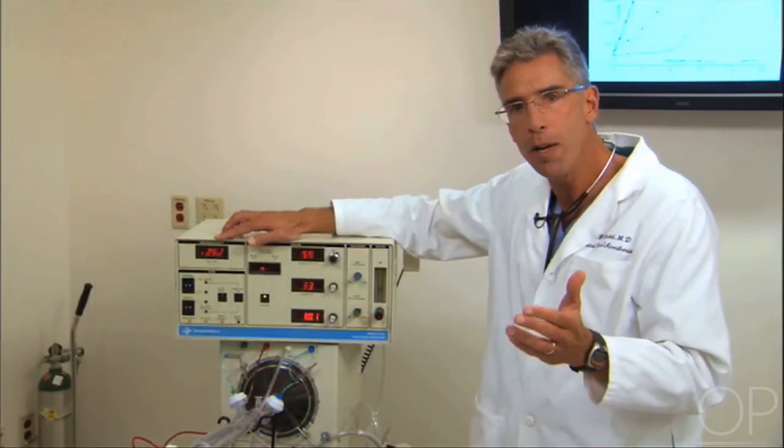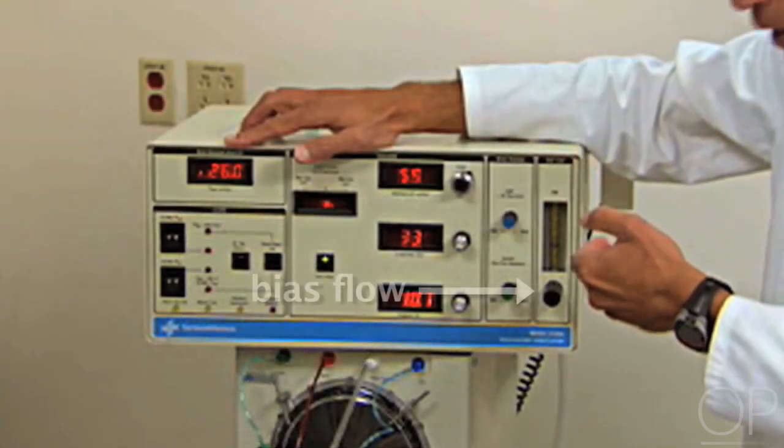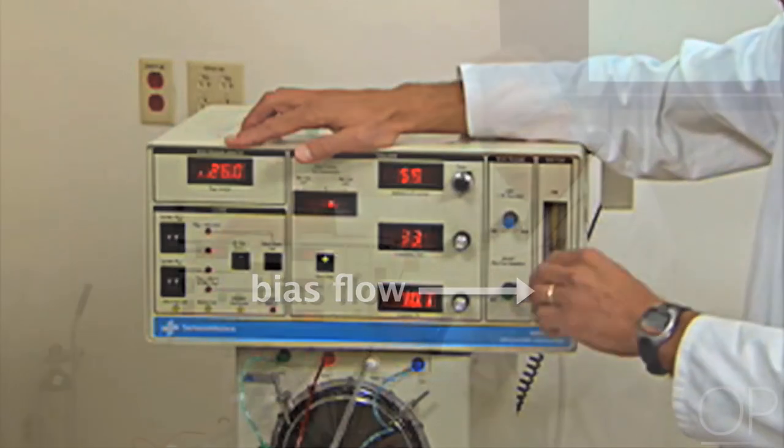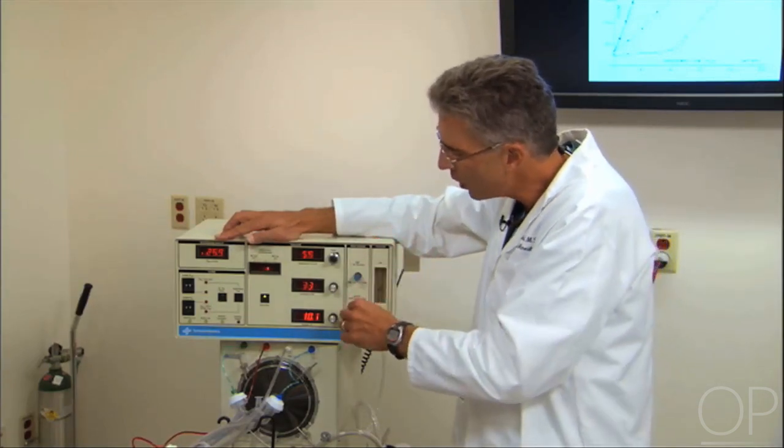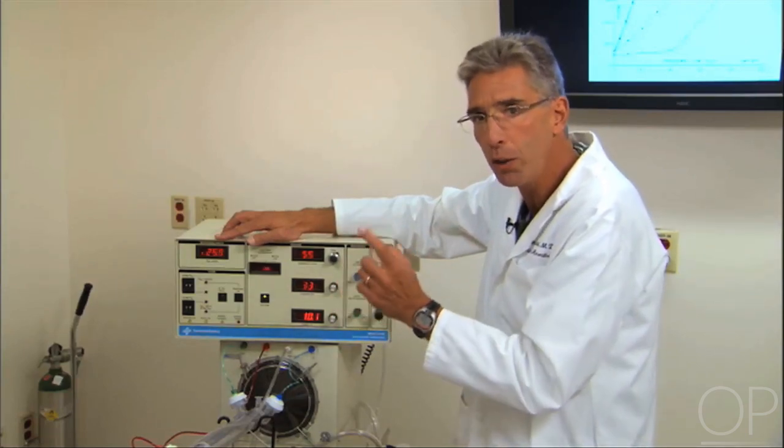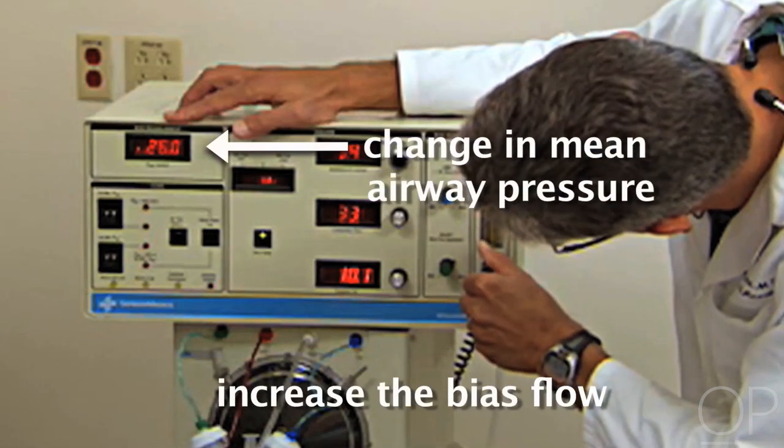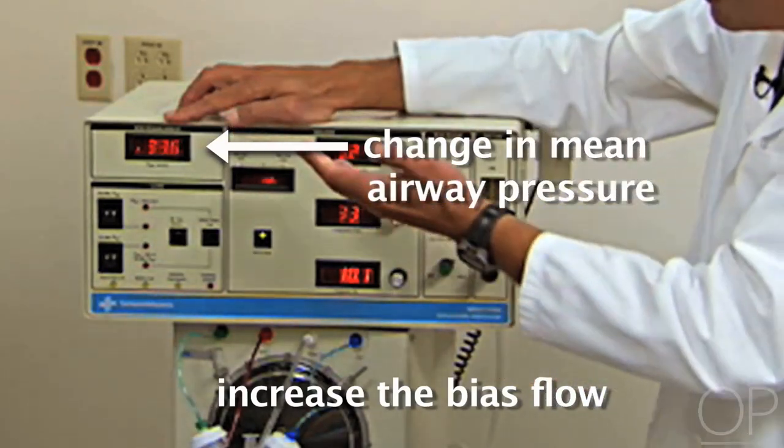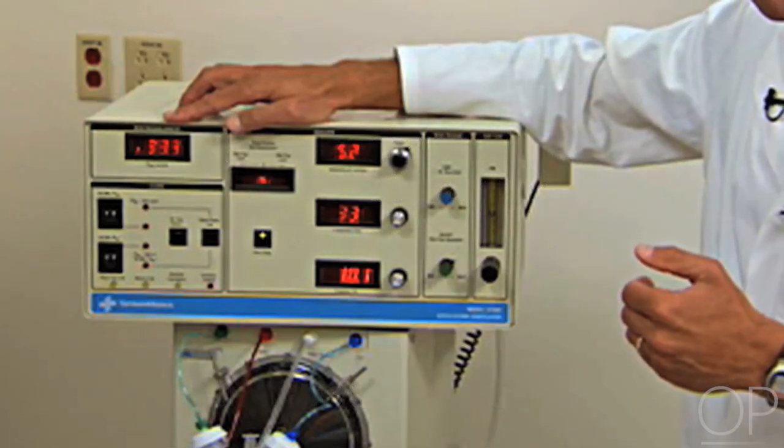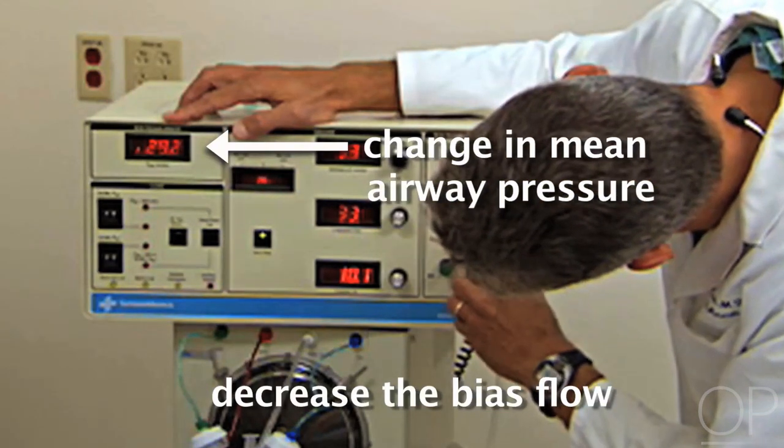And the other way to manipulate mean airway pressure is to increase the flow through the circuit, through that fixed orifice, and that's called the bias flow. And we can do that by manipulating this knob. All patients need to start with a bias flow of 20 liters per minute. Occasionally, when you've increased mean airway pressure maximally by closing the orifice, you will need to increase the bias flow to further increase the mean. So I'm going to now increase the bias flow from 20 to 25 to 30 liters per minute. And look what it's done to the mean airway pressure. It's increased it dramatically. Let me go back to 20 and you'll see that in reverse. 25 and 20. So that's mean airway pressure.